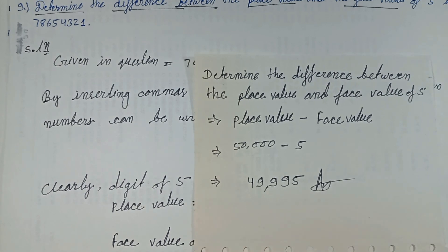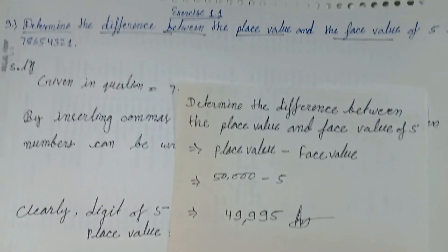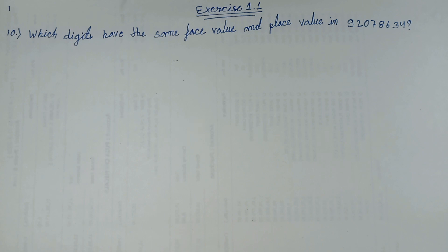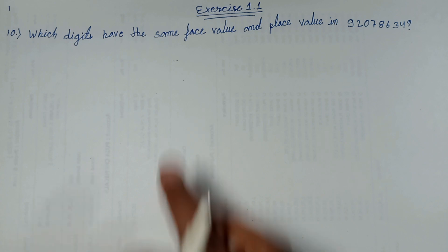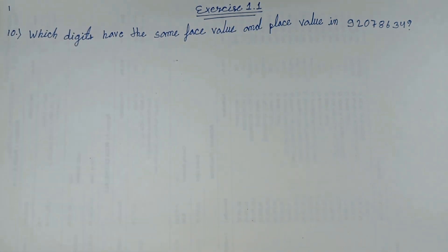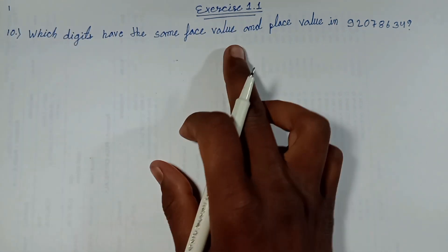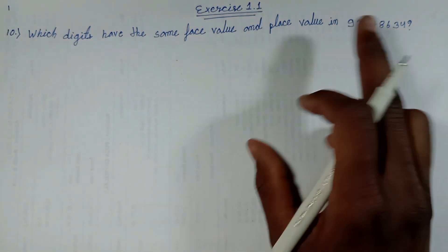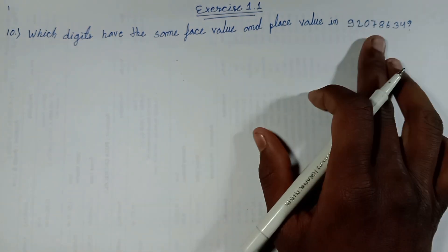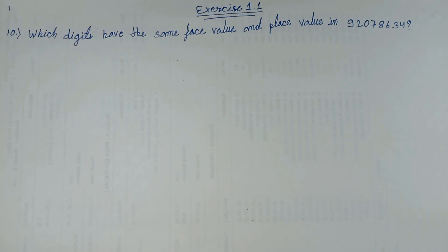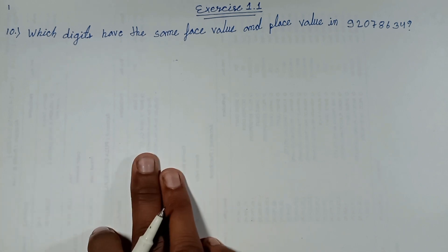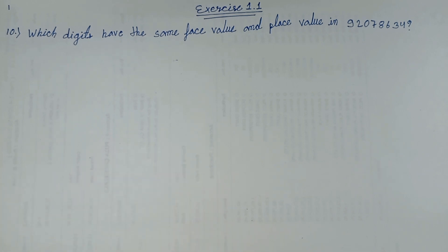Question number 9 and question number 10 from Exercise 1.1: which digit has the same face value and place value in these numbers? This question will be solved in the next episode. See you in the next episode with a new question. Thanks for watching.